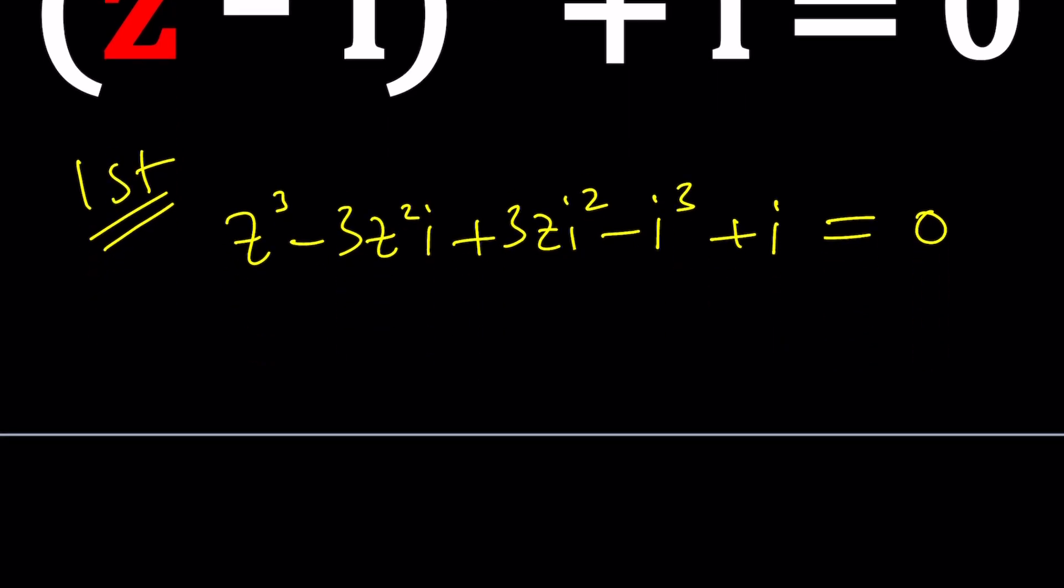Remember that i squared equals negative 1 and i cubed equals negative i. So this is going to give you a negative 1. We get z cubed minus 3iz squared minus 3z, and then i cubed is negative i. So negative i cubed is going to be positive i with another i, giving us plus 2i equals 0.